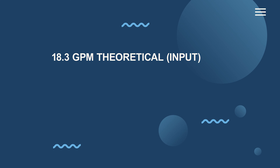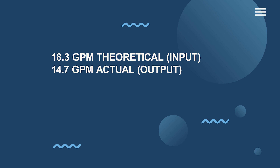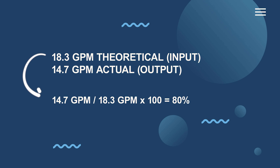As an example, let's say we have a pump with an input power of 18.3 GPM and an actual output power of 14.7 GPM. The efficiency of the pump can be calculated by taking 14.7, dividing it by 18.3, then multiplying by 100.